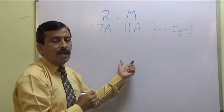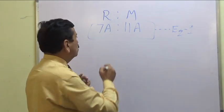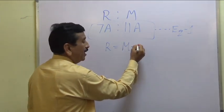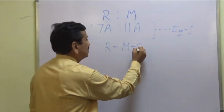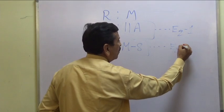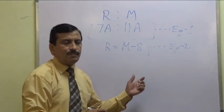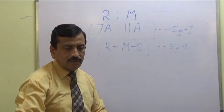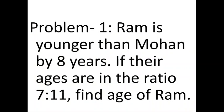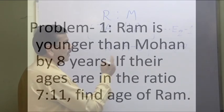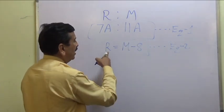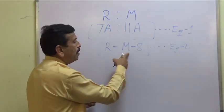Ram is younger than Mohan by 8 years, so Ram's age equals Mohan's age minus 8. This becomes equation number 2. So we have equation 1: 7a to 11a, and equation 2: R equals M minus 8.